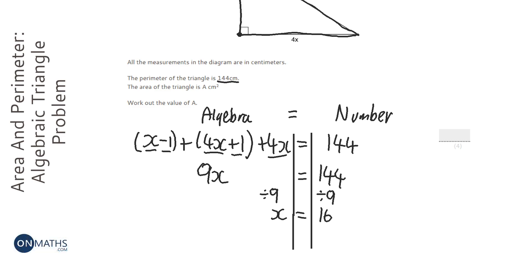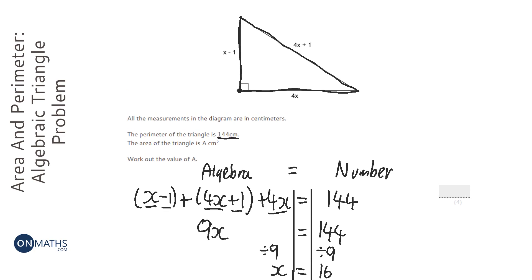We found out what x is, which is a good start, but it doesn't answer the question yet because we need to use that information to find out what the area of the triangle is. This bottom one here says 4x, so we're going to do 4 times 16, which is 64, so the length is 64. This one here says x minus 1, so we're going to do 16 minus 1, which is 15.